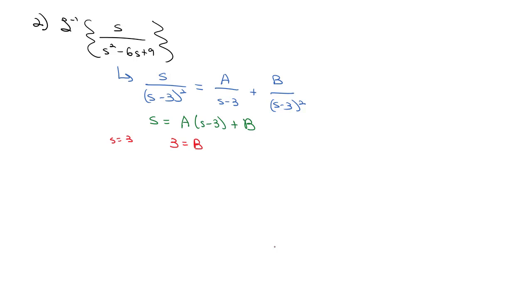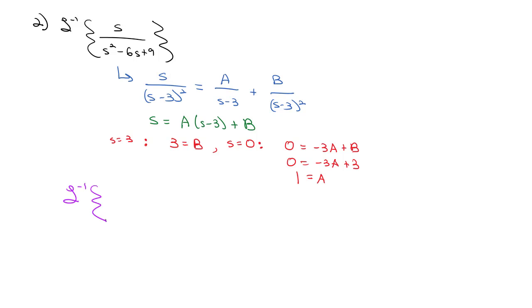This equation must be true for any value of s. Picking s equals 3 makes the first term go to 0, giving us 3 equals B. For the A term, we can never make it disappear, so we treat it as a system of equations. Since we know B equals 3, we pick s equals 0, which gives 0 equals negative 3A plus B, or 0 equals negative 3A plus 3, meaning A equals 1. So we're finding the inverse Laplace transform of 1 over (s minus 3) plus 3 times 1 over (s minus 3) squared.